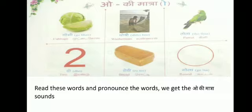Awesome words. For example, Ka plus O becomes Kho. Ik plus O — then we get Kho. Pronounce the word Kho. The pronunciation ending with O sound. So these are called O ki matra words.